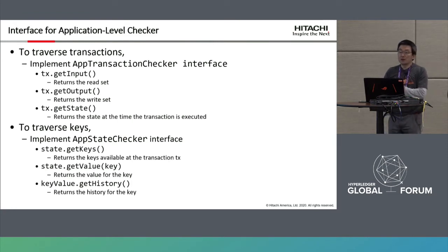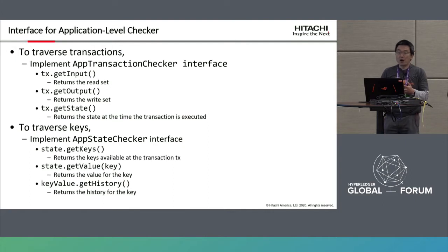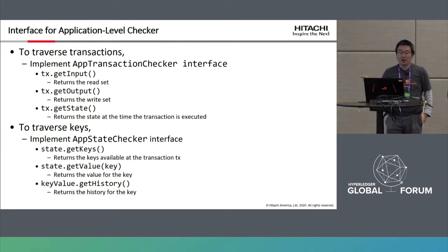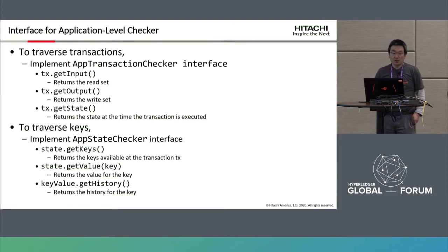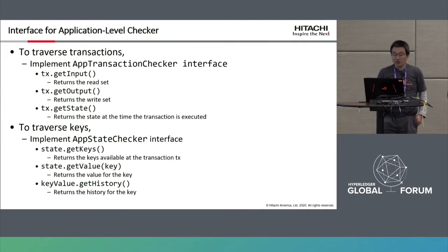The interface looks like this. To traverse transactions, implement the TransactionChecker interface — methods include TxGetInput, TxGetOutput, and TxGetState. To traverse keys, implement the StateChecker interface — methods include StateGetKeys, StateGetValue, and StateKeyValueGetHistory. So you can also check the history.